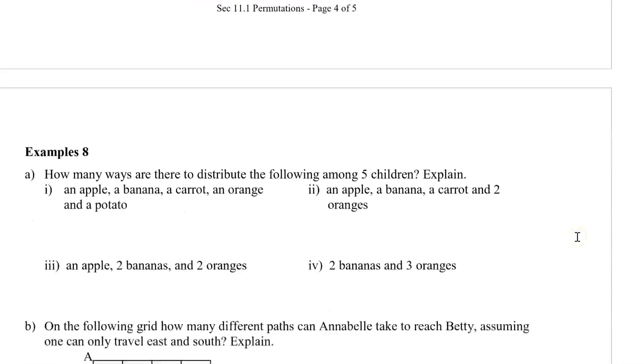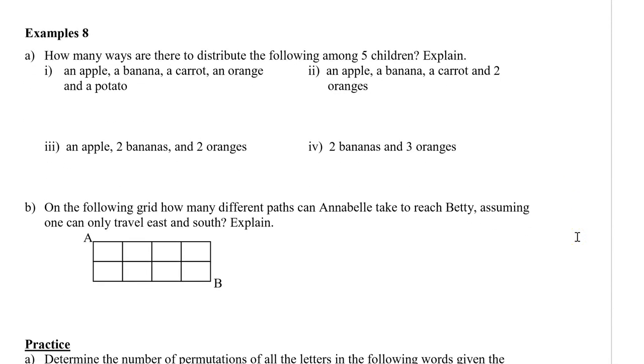Let's take a look at an example. Here we have five children. So how many ways are there to distribute the following among five children? We have an apple, a banana, a carrot, an orange, and a potato. They're all different. We have different fruit. We have different children. So what's going to happen is we give five choices for the first one. And then once the apple is given out, we have four choices. Let's say that second child gets a carrot, and then we have three choices, and then two choices, and then one choice. So really this is five factorial, which is 120.